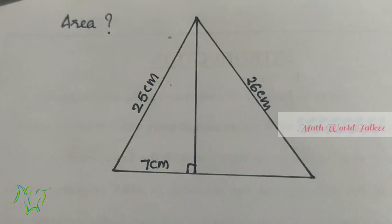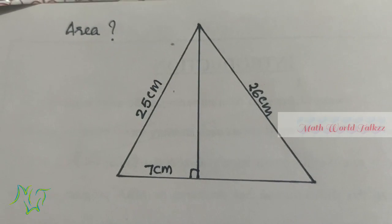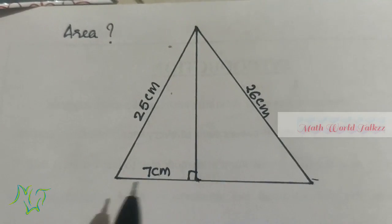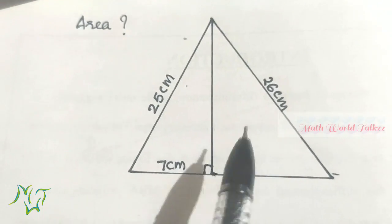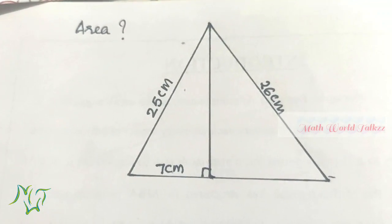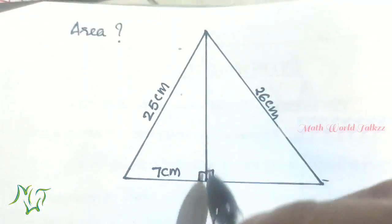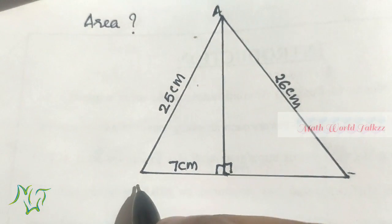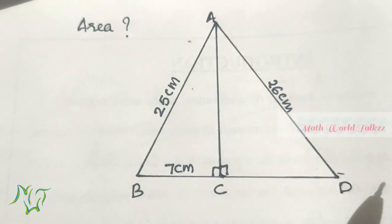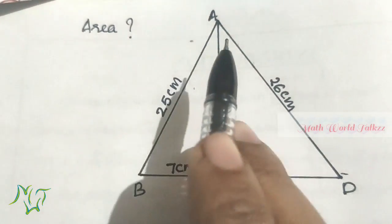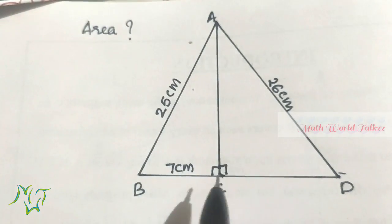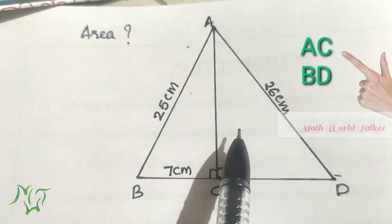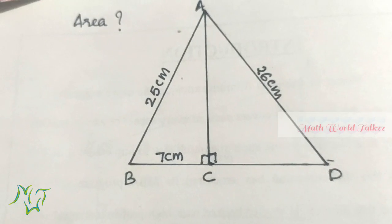Next, we want to find the area of this triangle. We know area of a triangle is half × base × height. Here the perpendicular height h is not given and the base is also not complete. But we can split this triangle into two right angle triangles. We give names: A, B, C, and D. We want to find the area of triangle ABD, which is half × AC × BD. We will find everything by making it into two right angle triangles.